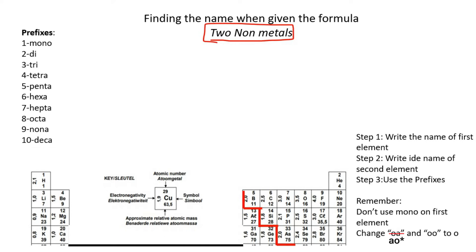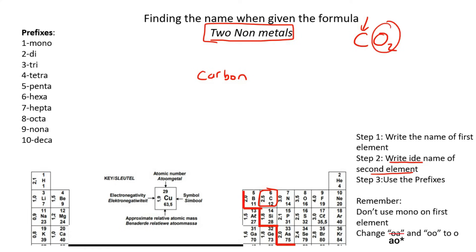So here's our first example. Step one: write down the name of the first element. The first element is carbon. Step two: write the IDE name of the second element. The second element is oxygen, but the IDE of that is oxide.